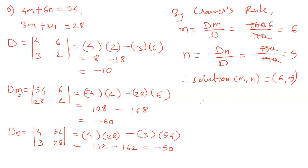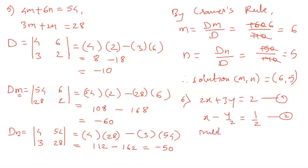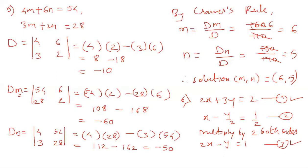Students, by using the same method, we can also find the solution of the sixth problem from your exercise: 2x plus 3y equals 2, and x minus y/2 equals 1/2. Multiply equation 2 by 2 on both sides. After multiplying, the 2s cancel and you get 2x minus y equals 1. Then solve equations 1 and 3 by Cramer's rule: find D, then Dx, then Dy, and use Cramer's rule to find x and y.